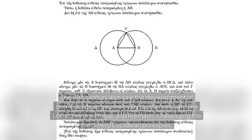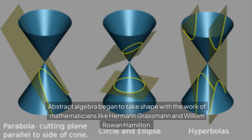The 19th century also saw the development of non-Euclidean geometry by mathematicians like Lobachevsky, Bolyai, and Riemann, challenging the long-held Euclidean principles. Abstract algebra began to take shape with the work of mathematicians like Hermann Grassmann and William Rowan Hamilton.